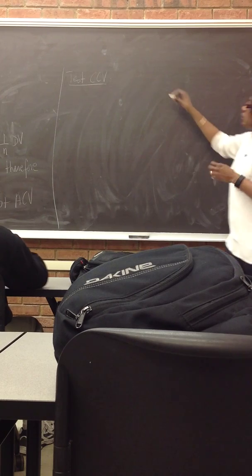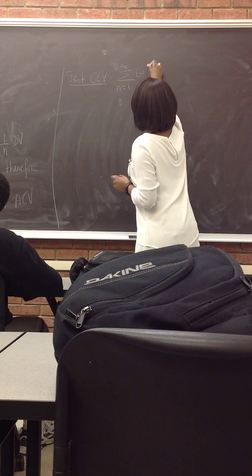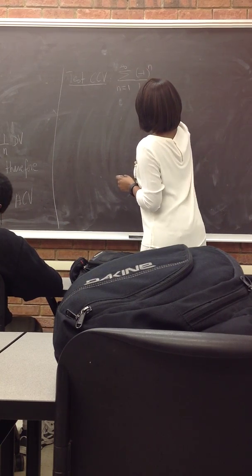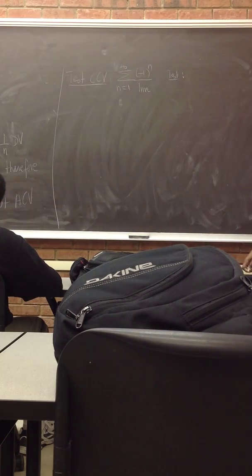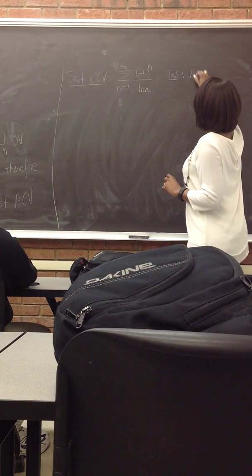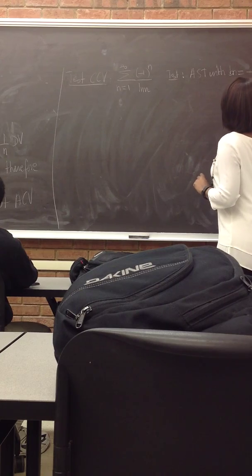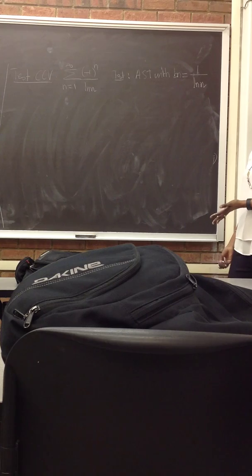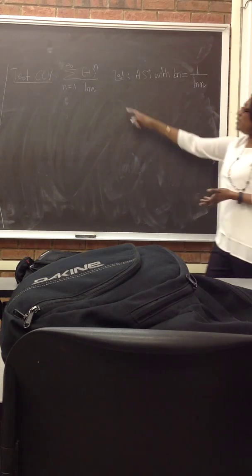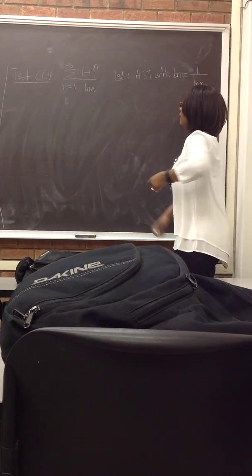When we're testing CCV, we just look at our original series that is given to us. Negative 1 to the n over natural log of n. Now, what test do I apply for this one? AST. AST, that's an alternating series, so AST. So this is when you test CCV, you just go back to all the previous tests. And most of the time it's going to be AST because you have minus 1 to some power.